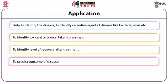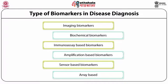Depending on the principle of detection, six types of biomarkers have been identified: imaging-based biomarkers, biochemical-based biomarkers, immunoassay-based biomarkers, amplification-based biomarkers, sensor-based biomarkers, and array-based biomarkers. All these biomarkers are based on different principles of detection and differentiation of healthy and diseased tissue.